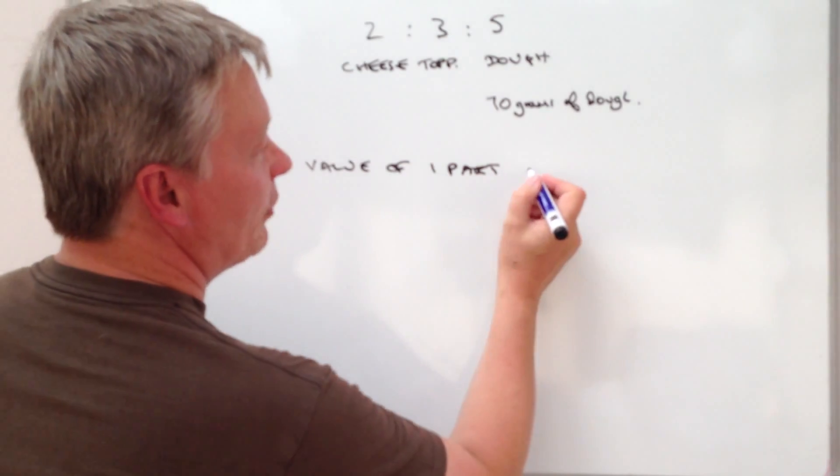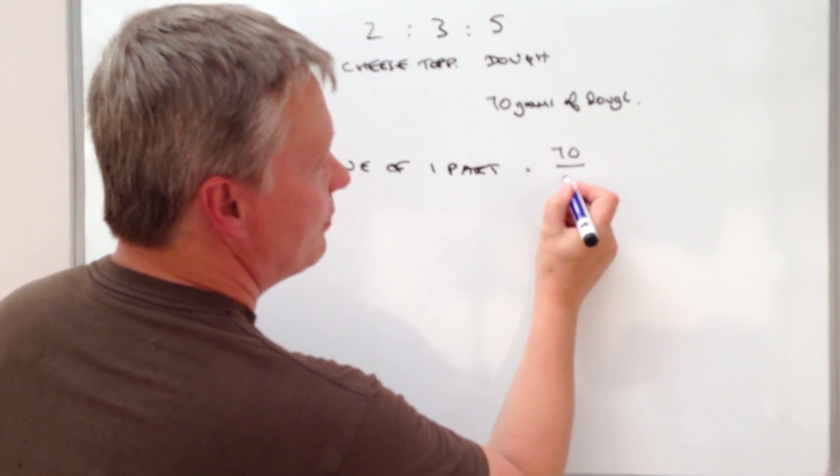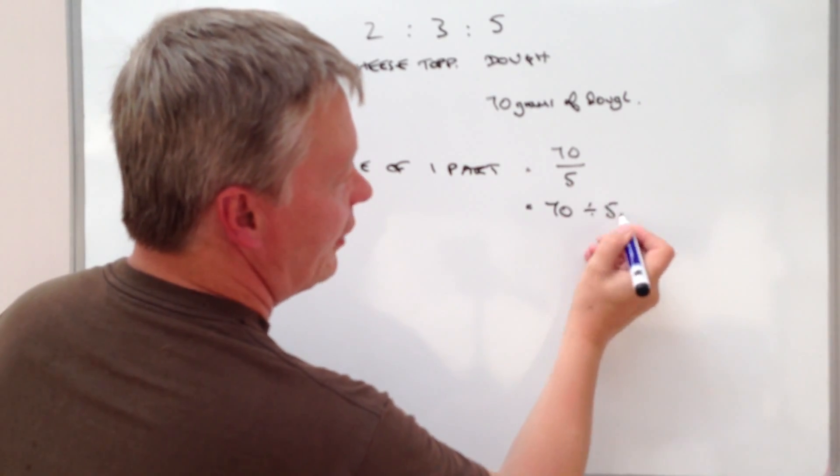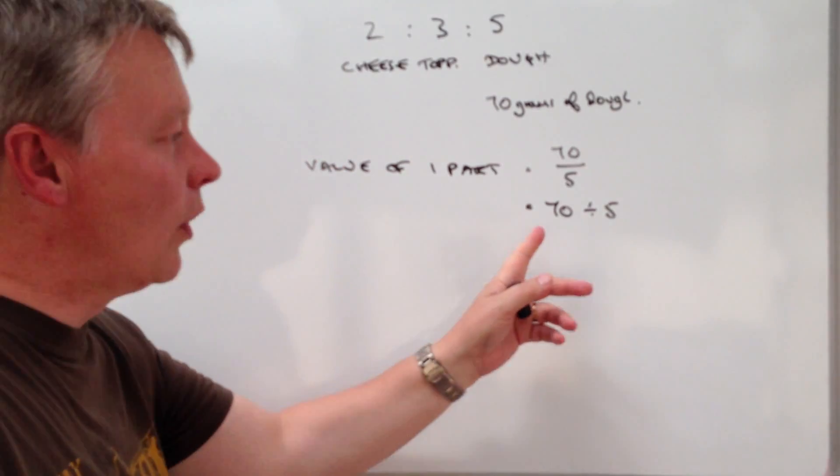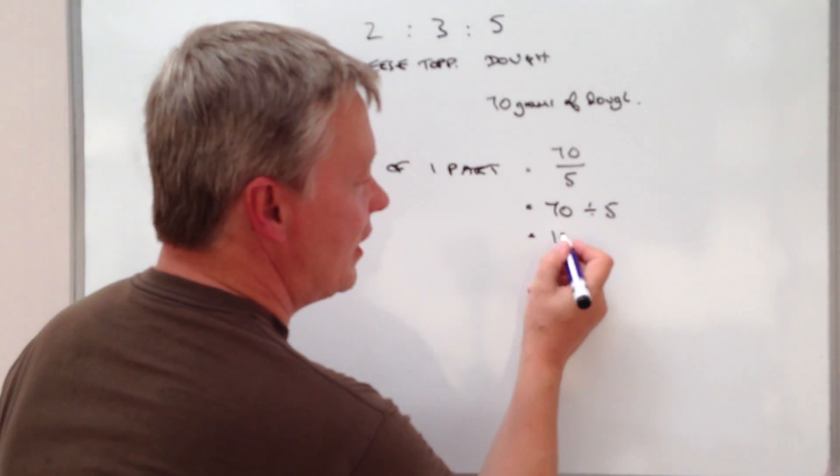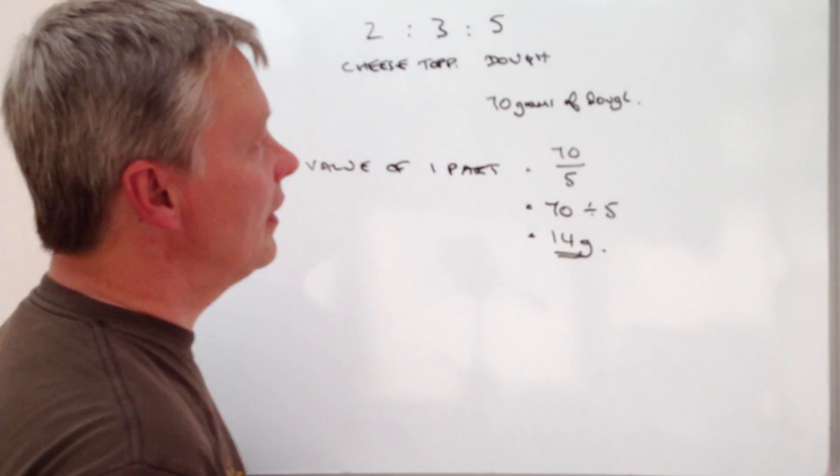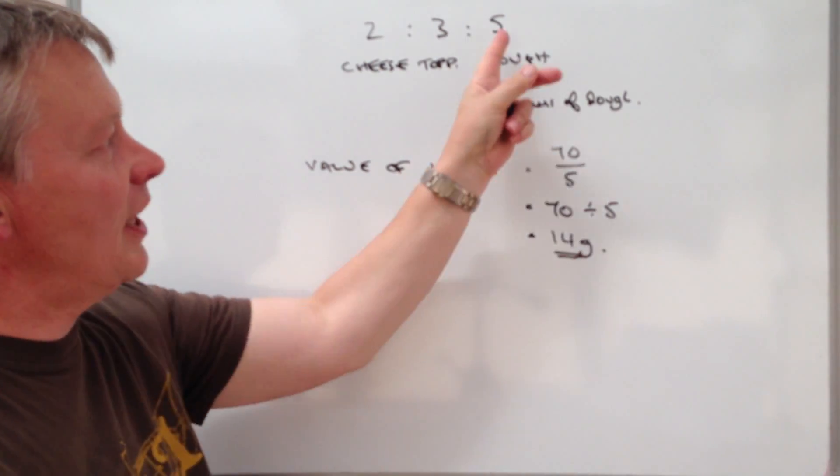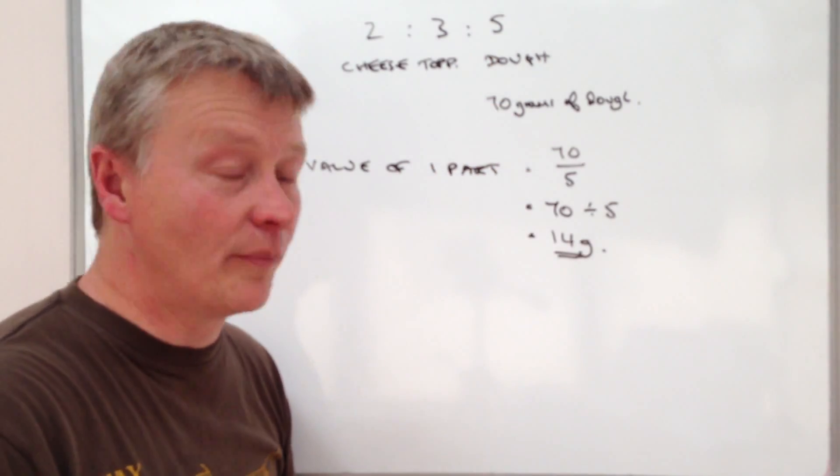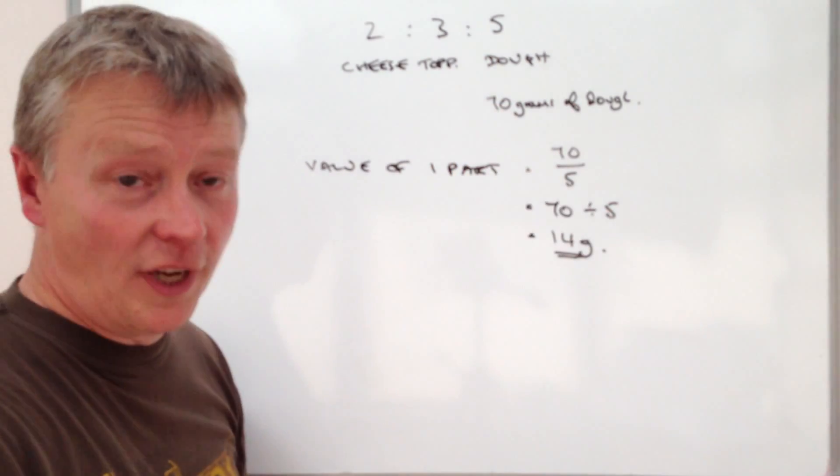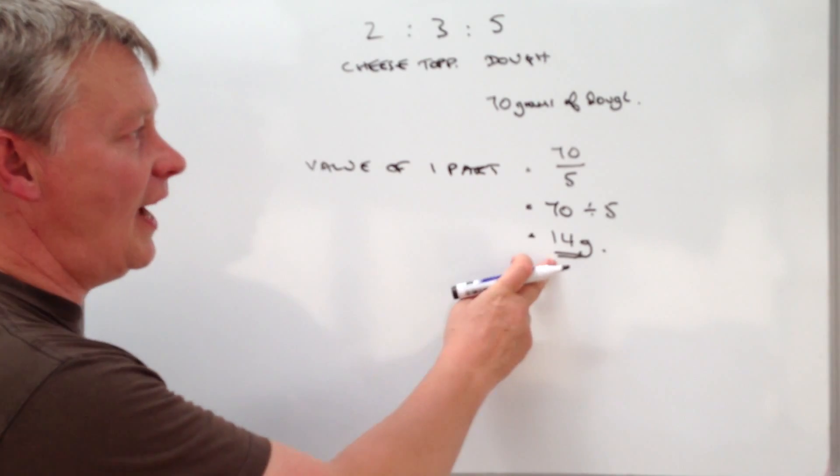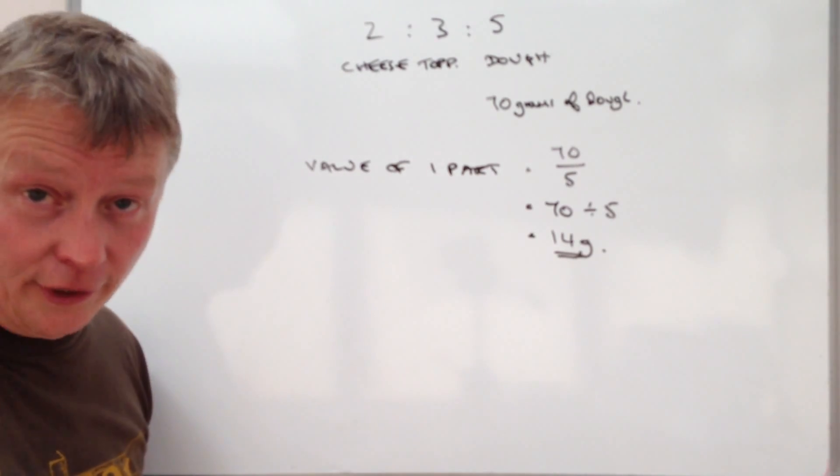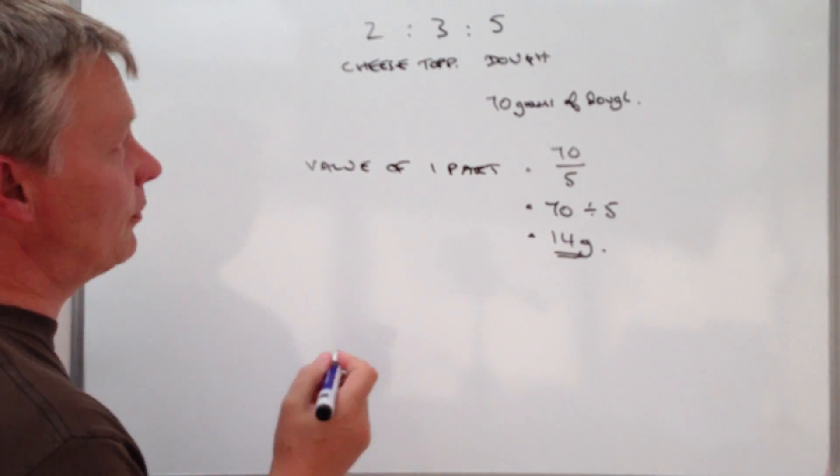If you divide 70 grams by five, that will give us the value of one part. So the value of one part equals 70 divided by five, that's going to give the value of one part as 14. In other words, each of these parts here would be 14 grams. It happens to be five parts of them, so 70 grams of dough. Now we've got the value of that, it will allow us to work out the value of the topping and also the value of the cheese.